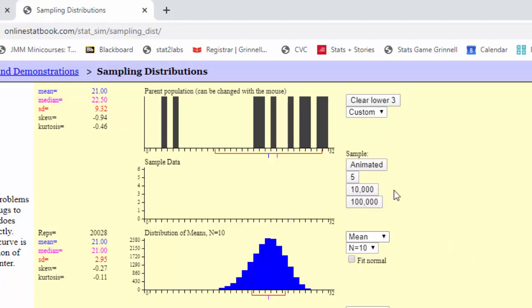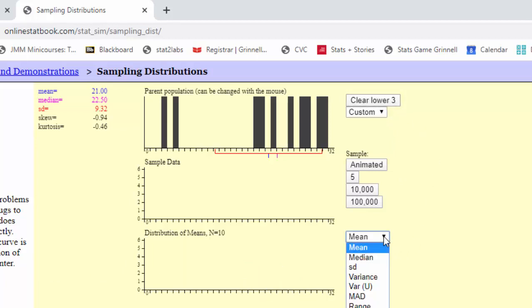Now I'm going to change my statistic of interest. Maybe I'm interested in the median time. So if I look here in my population, the median time was 22.5. I'm going to sample 10 observations from my sample, doing the resample. And then I calculate the median of those 10.